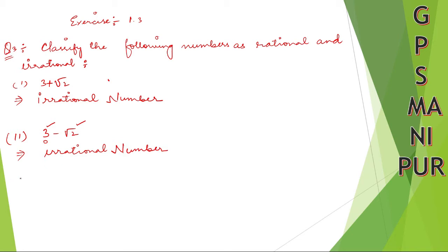Roman number 3: 2 root 5. Root 5 is an irrational number. Any number multiplied by an irrational number will become an irrational number, so this is also an irrational number.